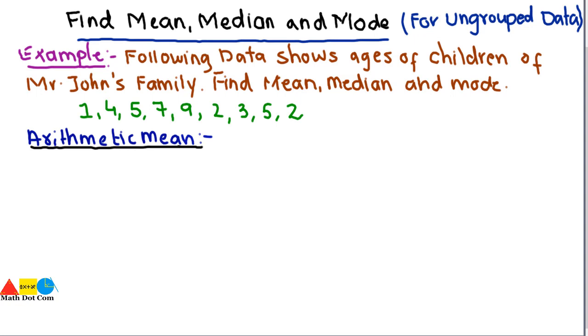So let's find out the arithmetic mean first by using the given example where data is given that shows the ages of the children of Mr. John's family: 1 year, 4 year, 5 year, 7, 9, 2, 3, 5, and 2.